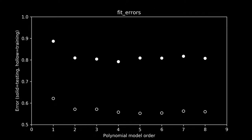A few things jump right out. First is the wide gap between the training errors — the hollow circles — and the testing errors — the solid circles. Right away we can see that there's a substantial difference between the two datasets. Second, there's a precipitous drop in error going from a linear to a quadratic model, that is a first to a second order polynomial. This makes sense: when we were eyeballing it, we could see that the linear fit failed to capture the curvature of the data, one of its most prominent features. The quadratic curve captured that just fine.